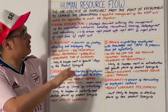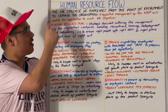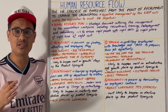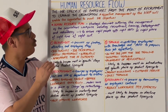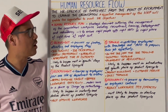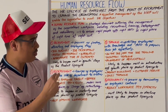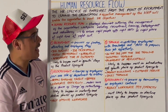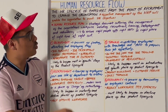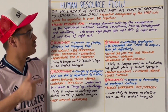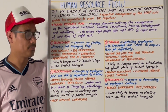Phase zero of the human resource flow is the human resource plan. This is a strategic document outlining the management of the organisation's workforce, including recruitment, training, redeployment, and redundancy. It ensures that you've got the right people with the right skills in the right place at the right time at the right cost.